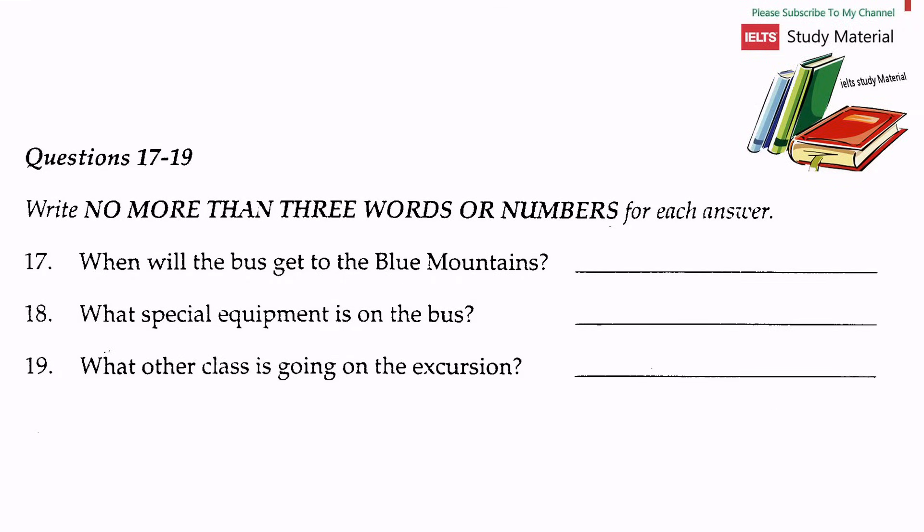Now look at questions 17 to 19. The bus should arrive in the Blue Mountains at 11 a.m. We'll have time to do the first of our tasks before lunch. The bus does carry one piece of special equipment — a first aid kit. I certainly hope we won't have to use it but it's nice to know it's there in case we have a medical emergency. The other class on this excursion is 3B, so I know it'll be a good day.